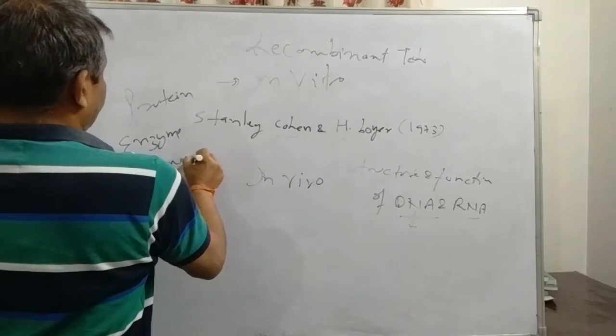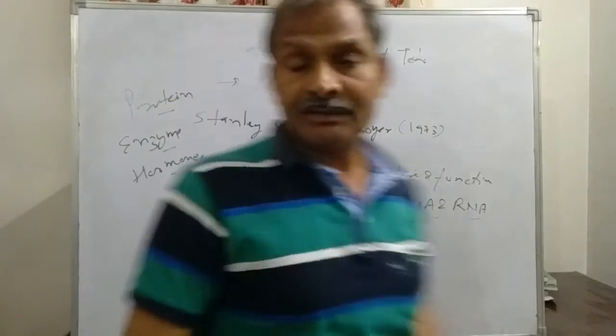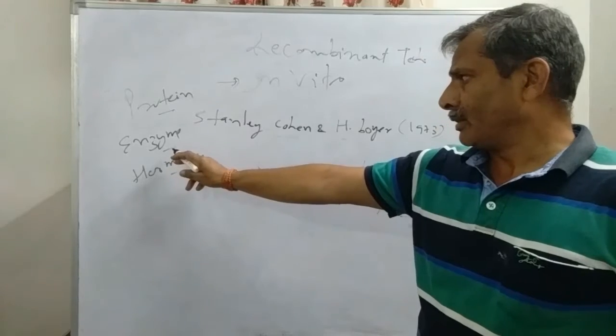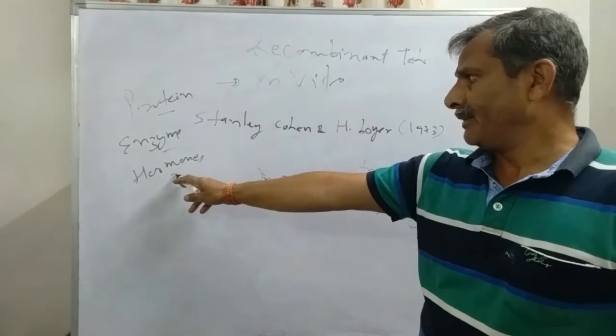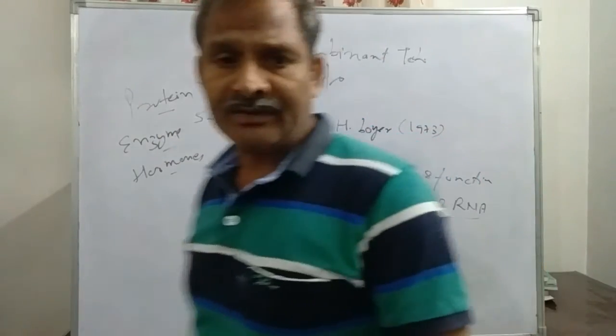As we see that proteins, enzymes and hormones, these all are some kind of proteins. Because enzymes, as we know, are high molecular weight proteins. And same is with the hormones. They all are of proteinaceous nature.